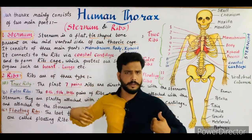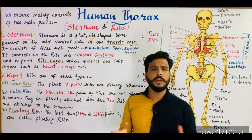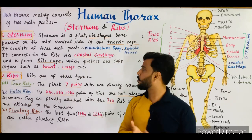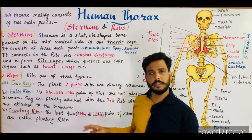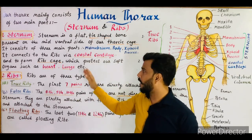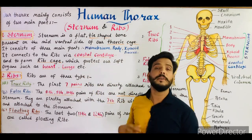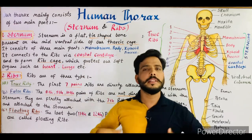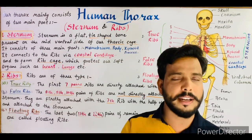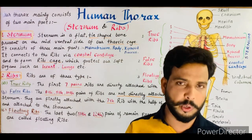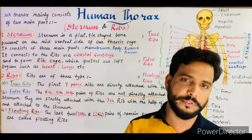Thus the ribcage is formed. It is a hollow structure which protects our soft organs such as the heart, lungs, and blood vessels. This thoracic cage contains and protects all these soft organs.